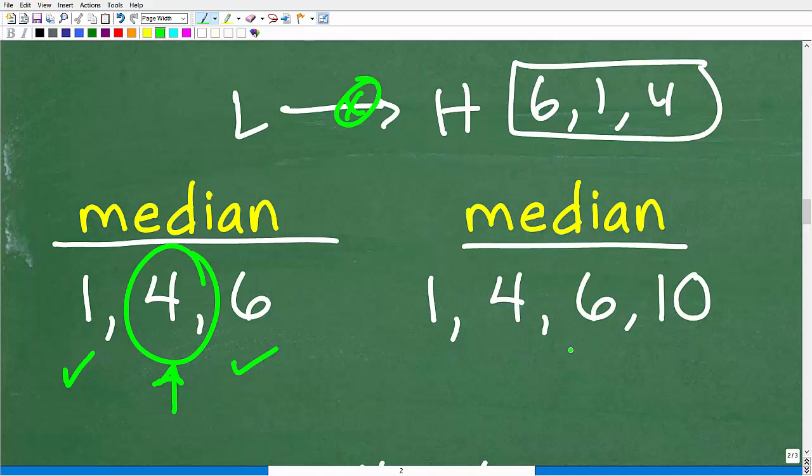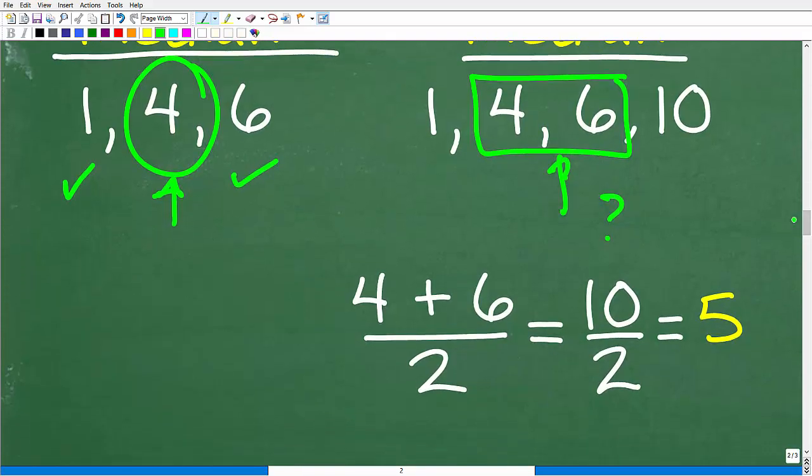But what about over here? Well, there is no middle number, right? We're like, okay, we have this in the right order, 1, 4, 6, and 10. So the middle number is what? Well, when you have an even number of values in your data set and you're looking for the median, what you have to do is you have to average the two numbers that are closest to the middle. And in this case, that is 4 and 6.